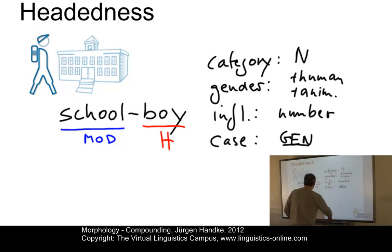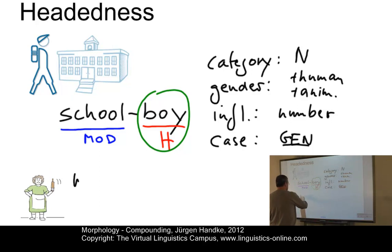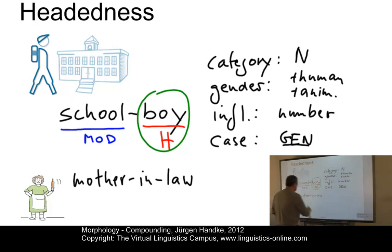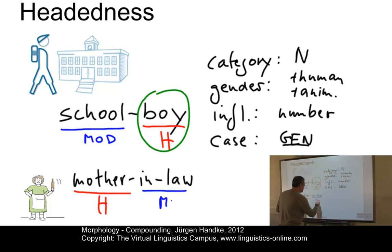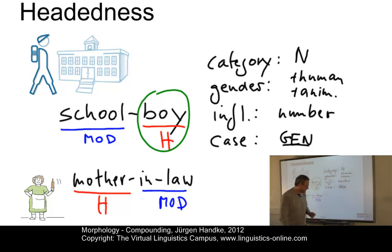These are the properties that determine the head. As you can see, the head normally stands on the right-hand side. However, there are some exceptional compounds in present-day English like mother-in-law, where the head is clearly on the left-hand side, whereas the modifier is on the right. So mothers-in-law would be the plural — mother takes number. It is also animate and human: 'the mother-in-law who' and not 'the mother-in-law which.' The whole thing is a noun. So these criteria apply also to left-headed compounds.